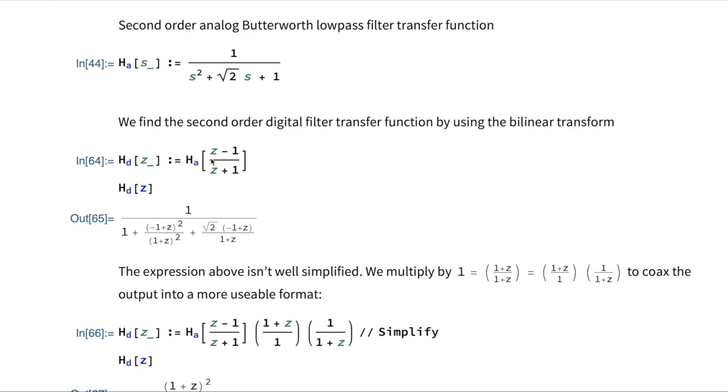Often you see the bilinear transform written with another term to handle the sampling rate, but usually I don't do it that way, so in this case I'm also not doing it that way.